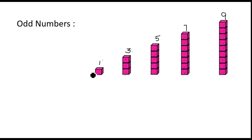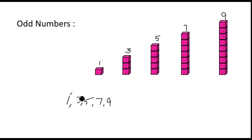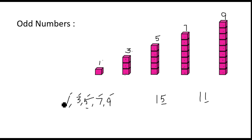Now we will see what you have to remember about odd numbers. The numbers one, three, five, seven, nine are odd numbers. Also, numbers ending with one, three, five, seven, or nine are called odd numbers. For example, fifteen ends with five, so fifteen is an odd number. Similarly, eleven ends with one, so eleven is an odd number.